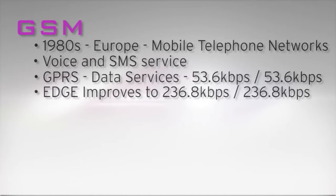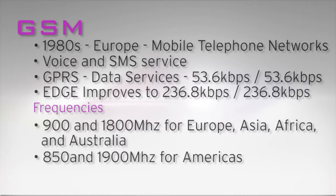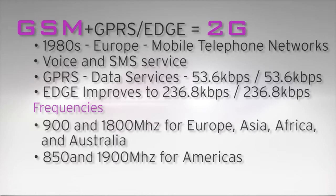The frequency bands were standardized as well, with the 900 and 1800 MHz bands in Europe, Asia, Africa, and Australia. 850 MHz and 1900 MHz are used in the Americas. The original GSM standard, including the GPRS and EDGE enhancements, is also referred to as 2G.